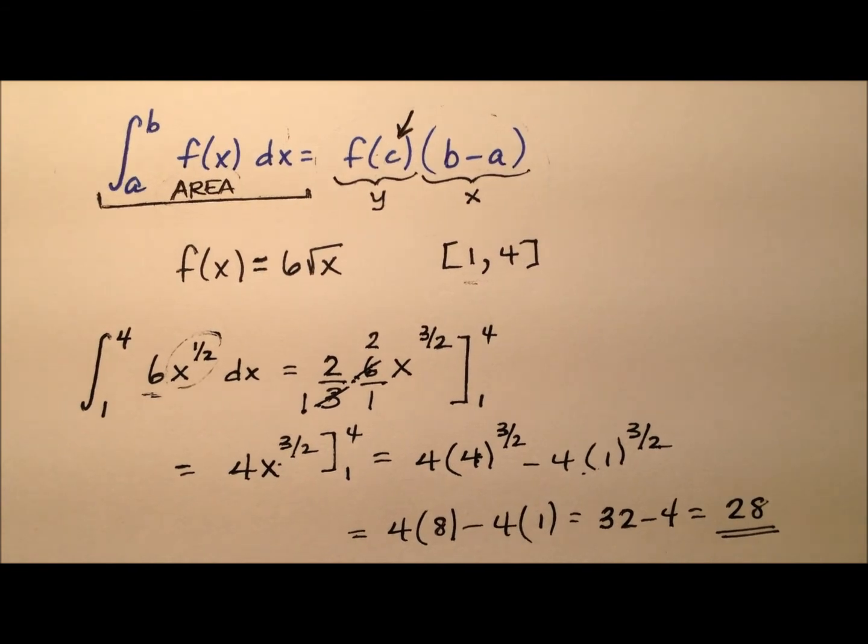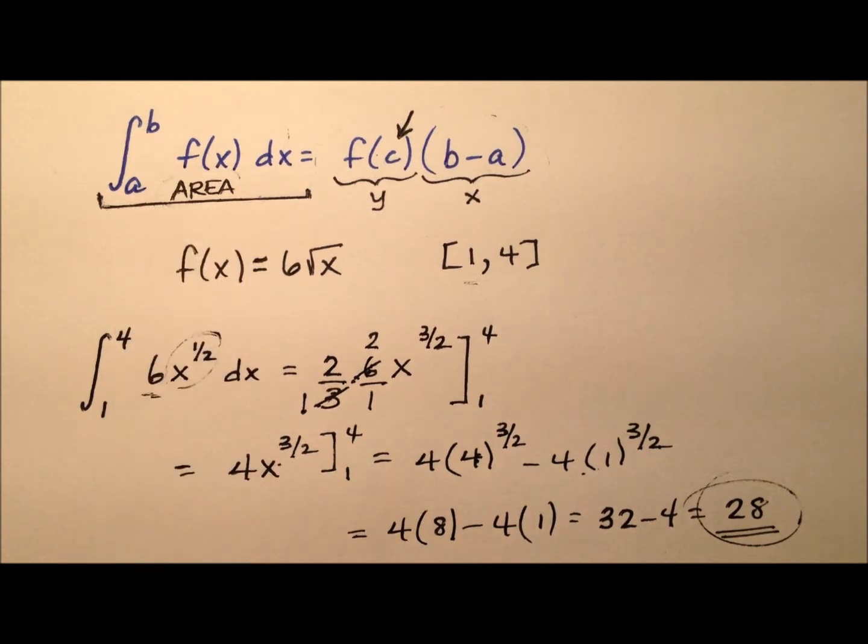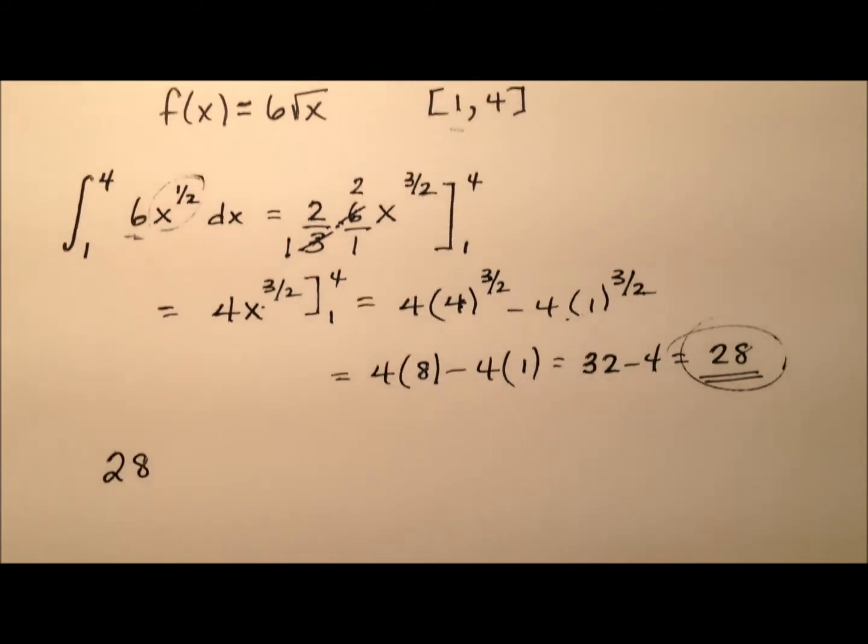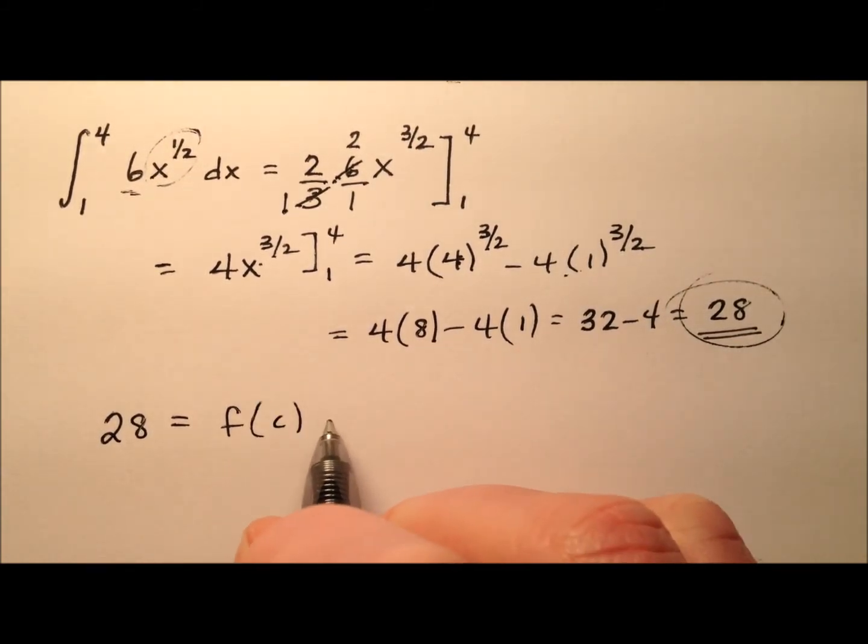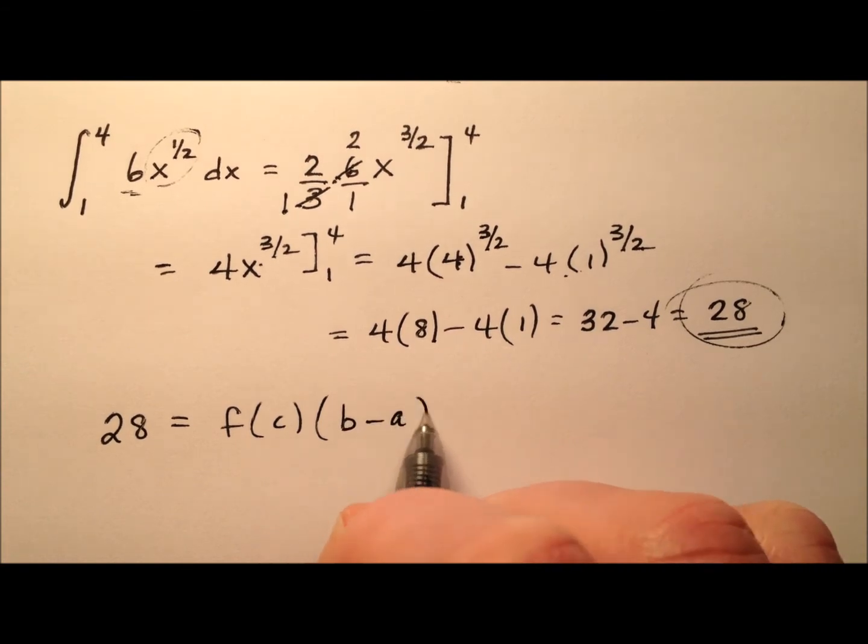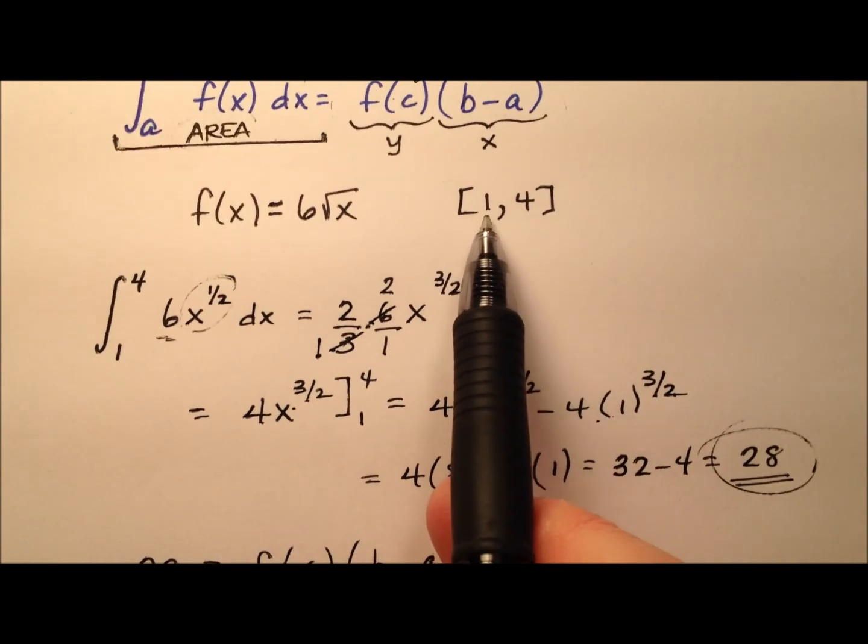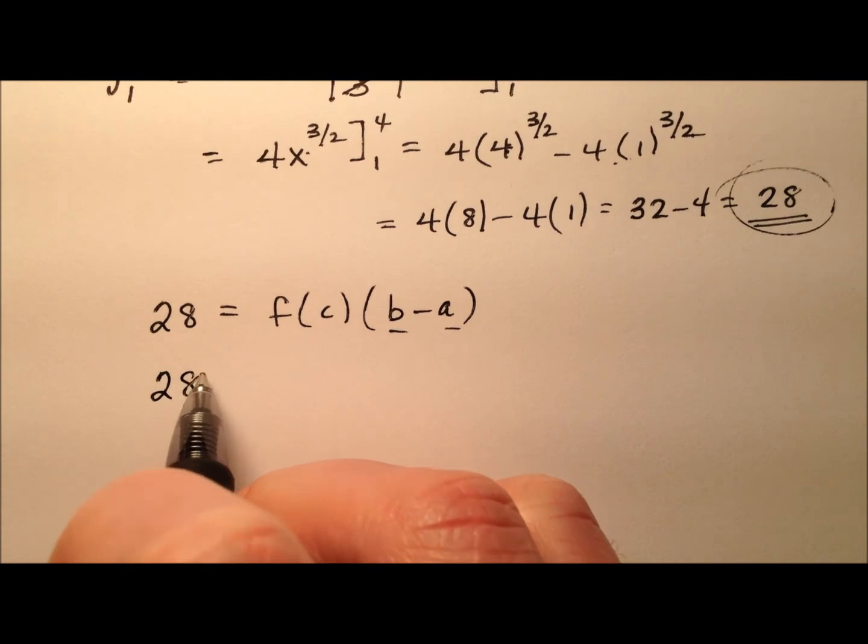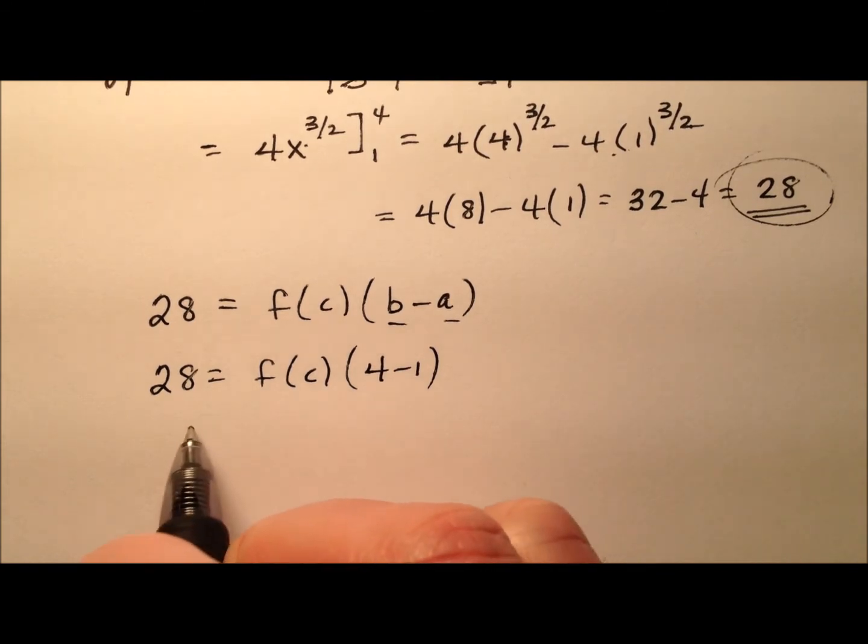So what we're saying here, we have done this definite integral, and we're saying the area is 28 square units. So I'm going to write this 28 down here, and the 28 is actually equal to f of c times this b minus a. We know values for a and b, those are just the endpoints of our closed intervals, so 1 and 4. So 28 equals f of c times 4 minus 1, which just becomes 3.